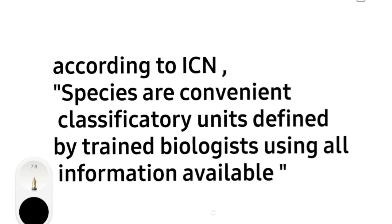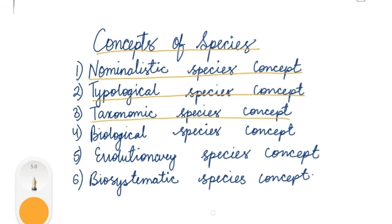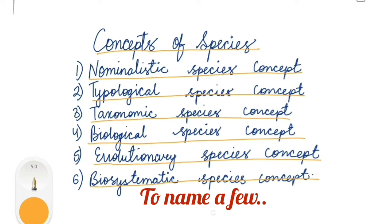The ICN — International Code of Nomenclature for algae, fungi and plants — has attempted to clarify the meaning of the word species. They stated: 'Species are convenient classificatory units defined by trained biologists using all available information.' Listed below are some major concepts of species: nominalistic, typological, taxonomic, biological, evolutionary, and biosystematic species concepts, among others.